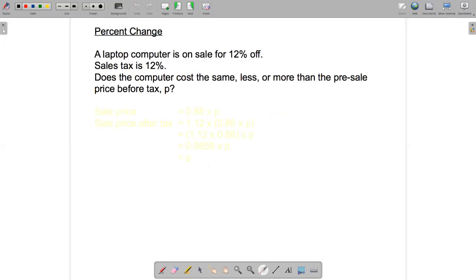Okay, percentage change, which can cause a lot of difficulties. So hopefully this example will help you work through some of those difficulties. So we've got a laptop computer on sale for 12% off. But sales tax is 12%. So the question is, does the computer cost the same, less, or more than the pre-sale price before tax, which we'll just call P. Okay, we don't need to know what P is. Could be $1,000, could be $2,000. It's one of the new MacBook Pros, it could be $3,000 or $4,000. It doesn't matter. Because the answer to the question doesn't depend on what the price is. All it depends on is this information here.